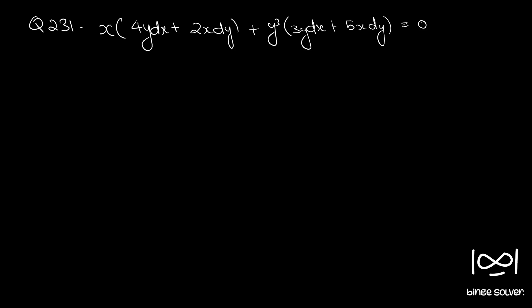Question 231. The equation is: x into (4y dx + 2x dy) plus y cubed into (3y dx + 5x dy) equal to 0.